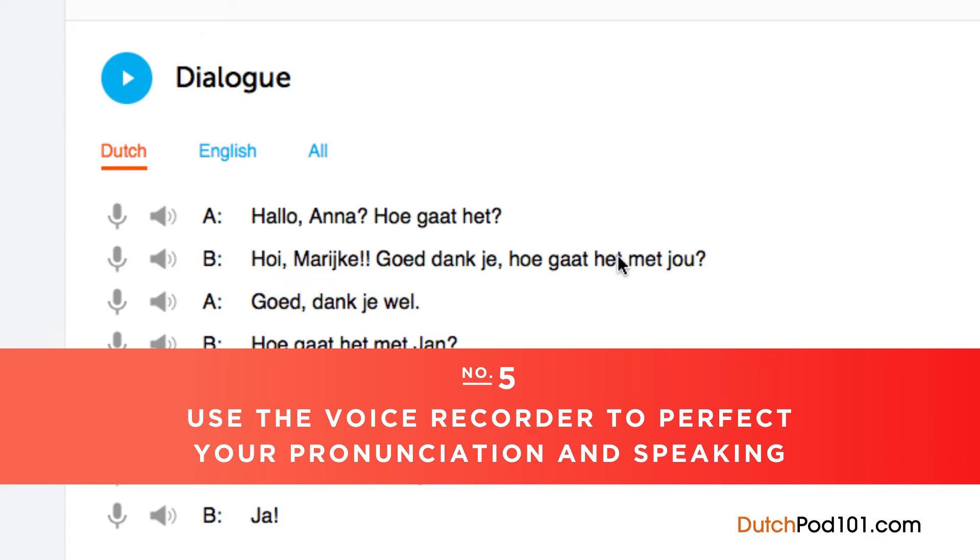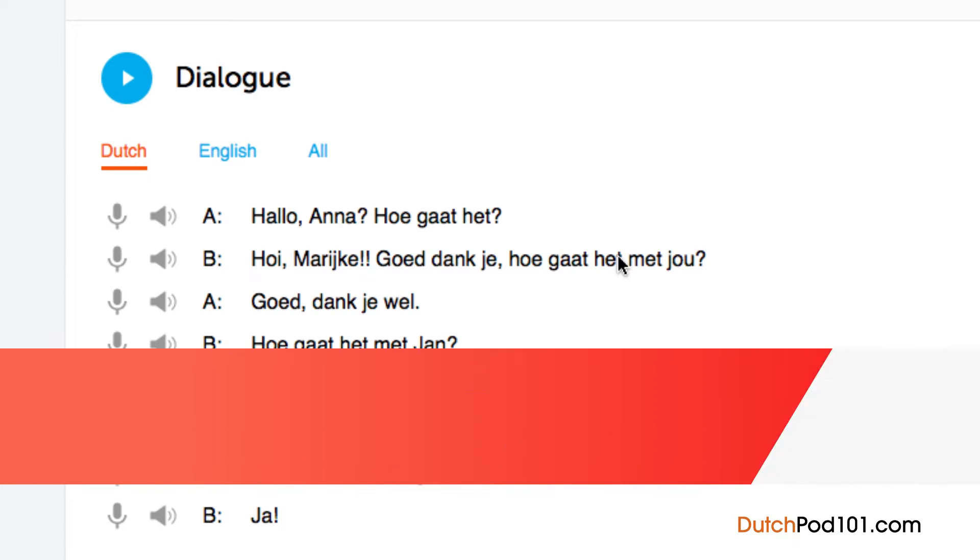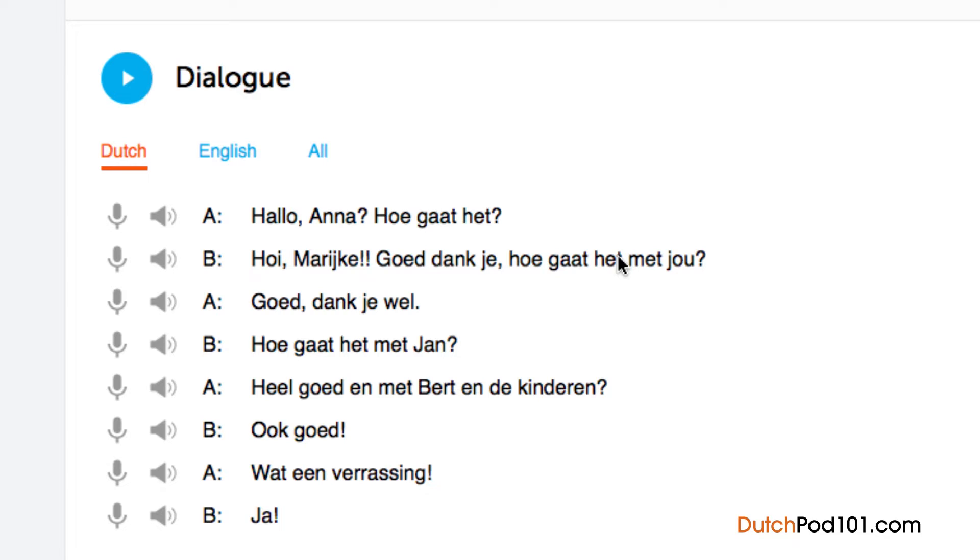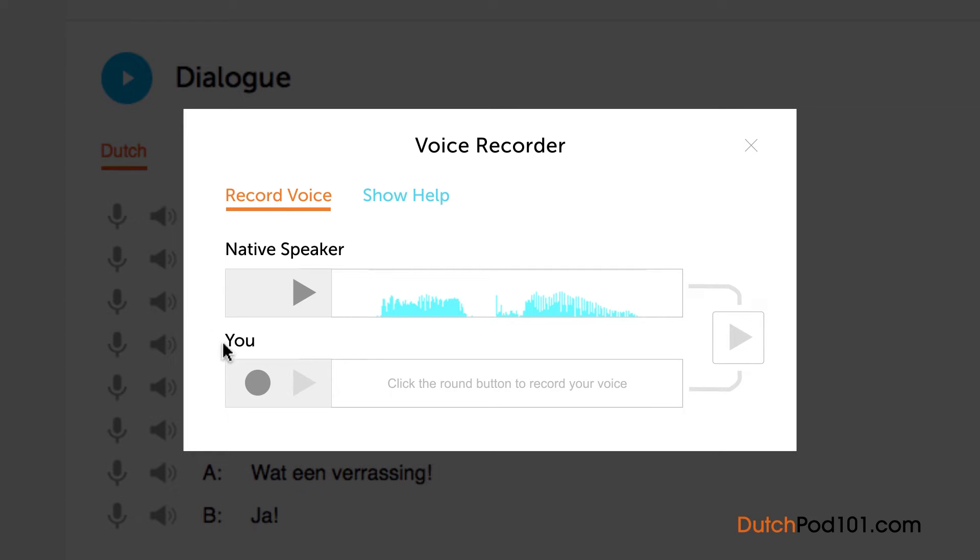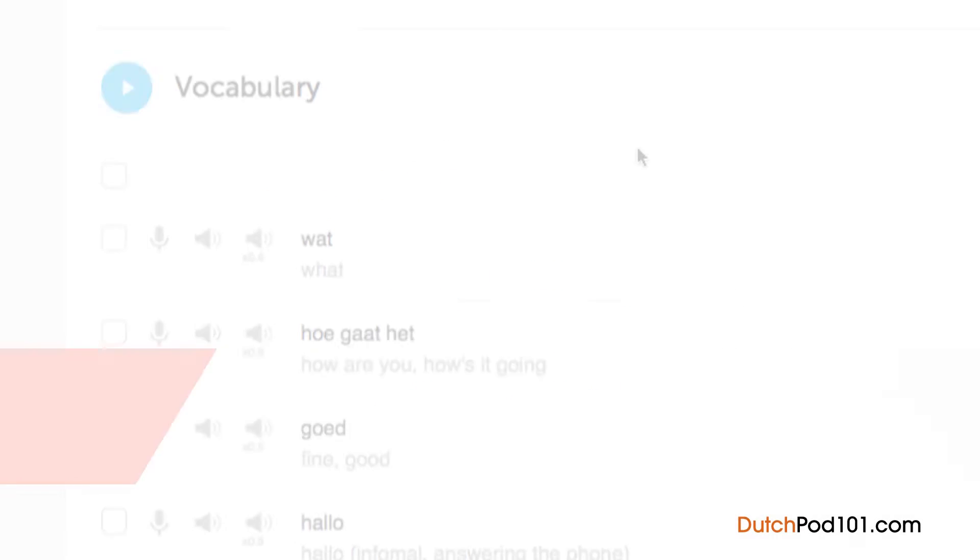Number five, use the voice recorder to perfect your pronunciation and speaking. In the Dialogue Study tool, you'll find a microphone icon next to each line. Click on it to record your voice. Then, compare it with the native speakers. Listen and adjust your pronunciation until you match that of the native speaker.